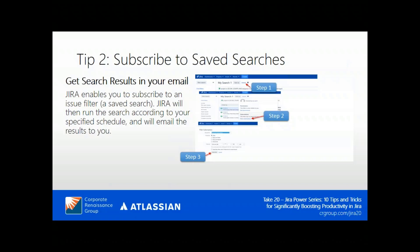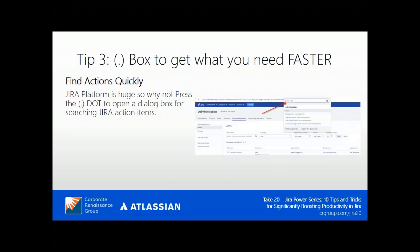You may not always want to open JIRA, so it's better to have your results mailed directly to your email. JIRA enables you to subscribe to an issue filter — a saved search. JIRA will then run the search according to your specified schedule and email the results at the frequency you've defined in the subscription.